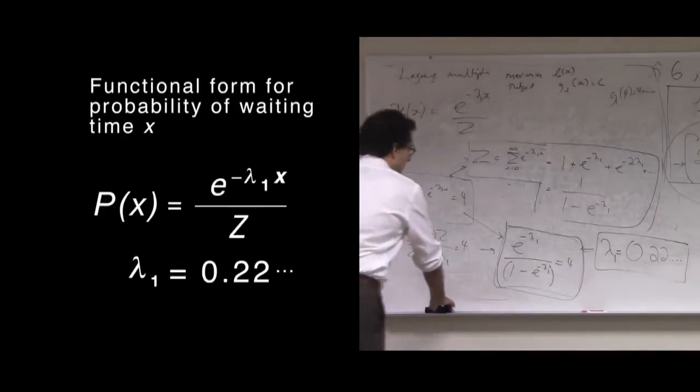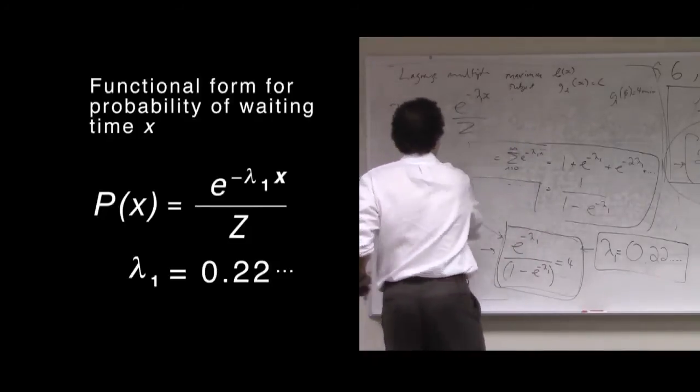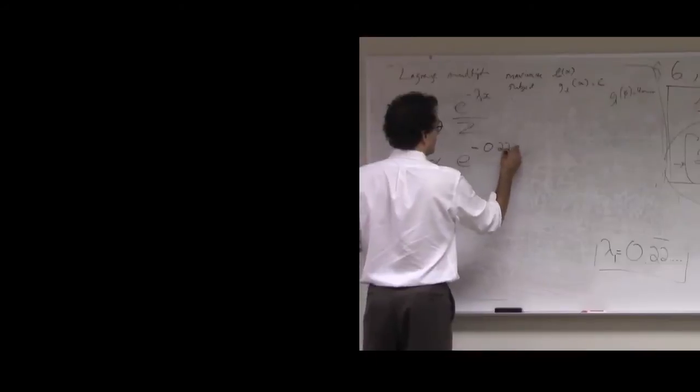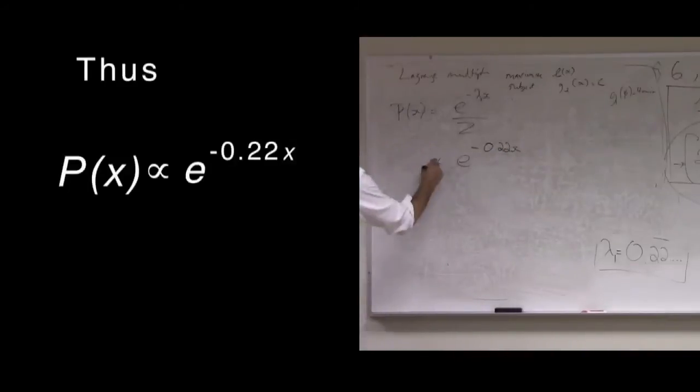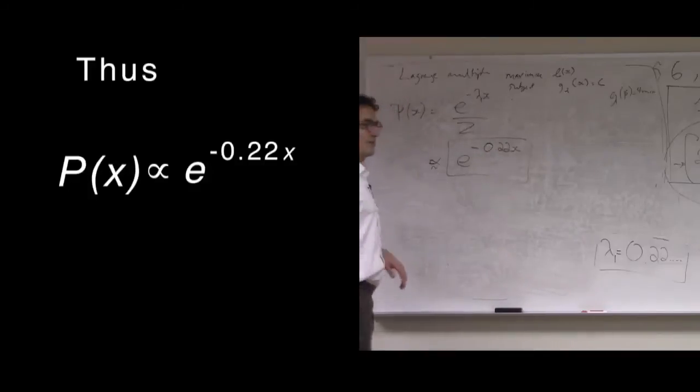And from there, we can also compute the value of z, and we can now write out the proportionality, roughly speaking. So, this distribution here, with appropriate normalization,